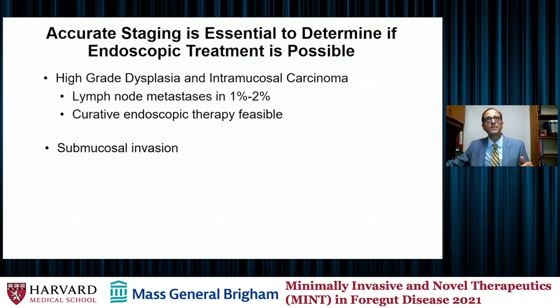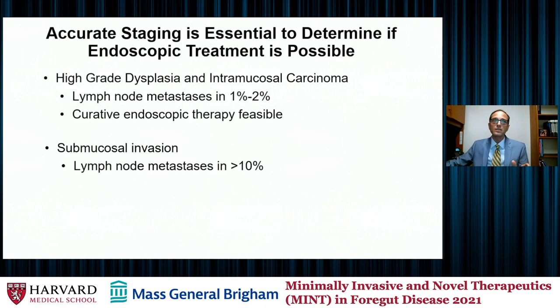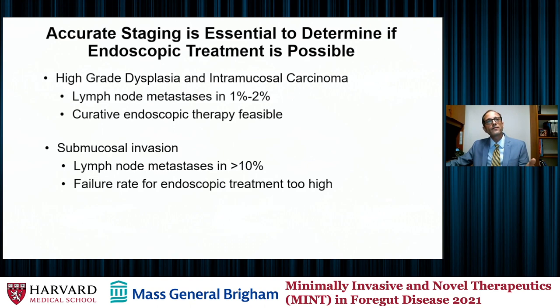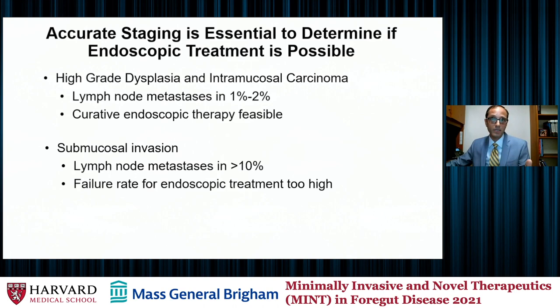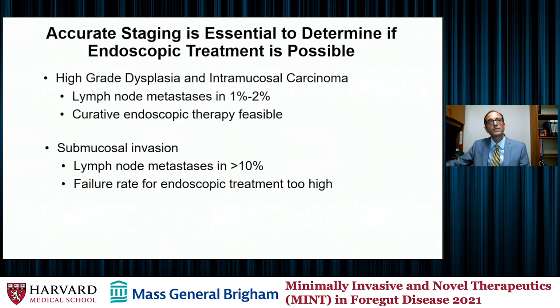When there's submucosal invasion of an intramucosal cancer, it becomes much more prone to metastasize to lymph nodes — you may see lymph node metastases over 10% of the time. The failure rate for endoscopic treatment is generally considered much higher in such patients. Generally this would at least be a patient to discuss in a multidisciplinary tumor board before considering endoscopic treatment; often these patients instead go to esophagectomy. There are techniques to get deeper into the wall if a patient is not a surgical candidate, provided endoscopic ultrasound has not shown lymph node metastases — but generally we don't treat submucosal invasion endoscopically.